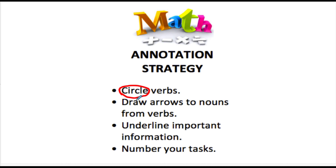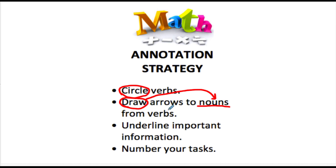The next thing is you're going to draw arrows to your nouns from the verbs. So if I see 'I'm walking three miles,' I'm going to circle my verb and draw an arrow to the nouns from my verbs.